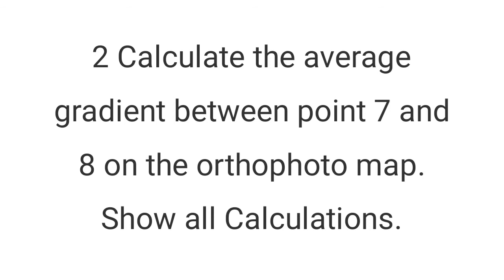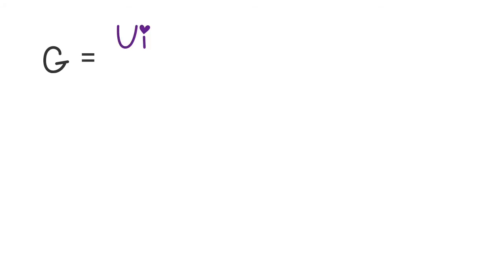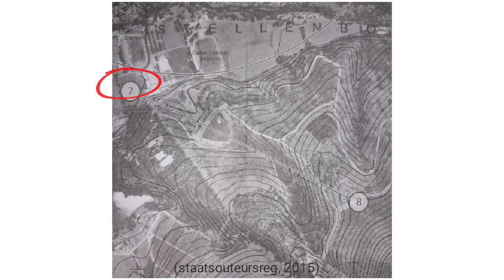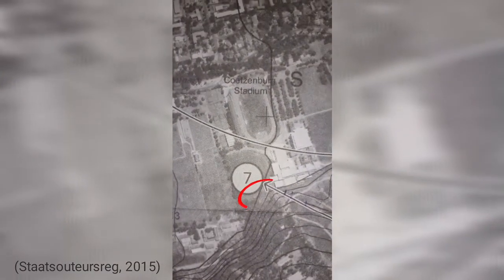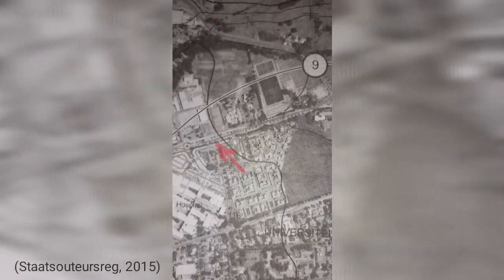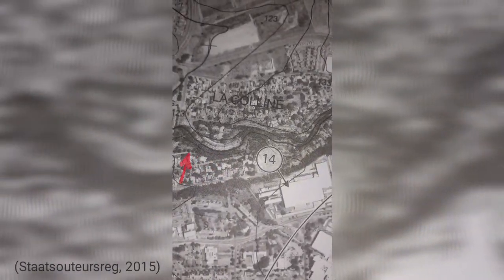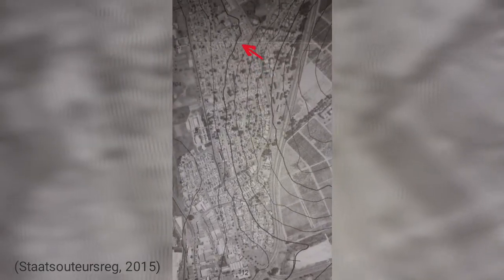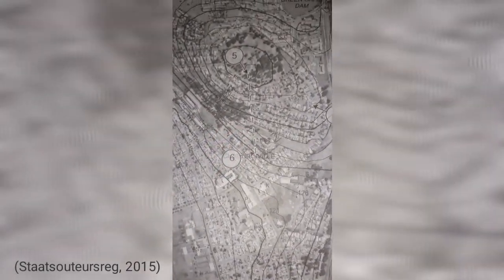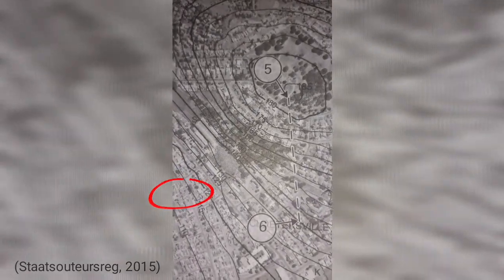The question says: calculate the average gradient between points 7 and 8 on the orthophoto map. Write the formula: gradient equals vertical interval over horizontal equivalence. Identify points 7 and 8 — for point 7, the arrow points to a contour line. If you don't see the height near it, trace the contour line until you find its height, which is 120.